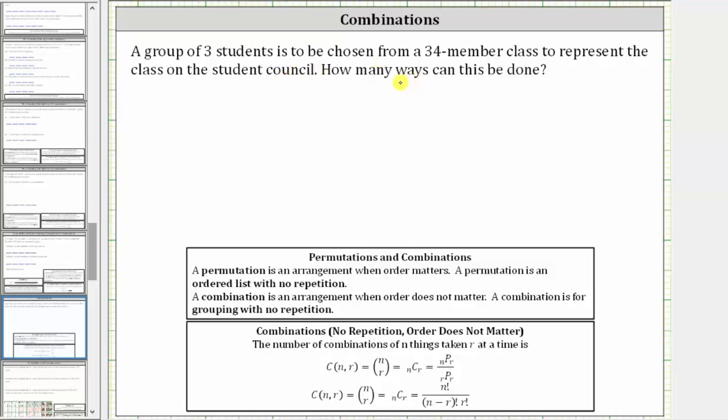A group of three students is chosen from a 34-member class to represent the class on the student council. How many ways can this be done?